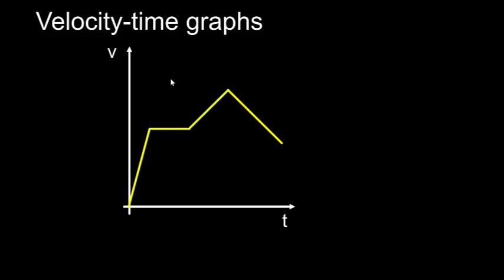There are two things we can learn from a velocity-time graph. The first is we can find the gradient of any section of this graph. Let's choose this area here.